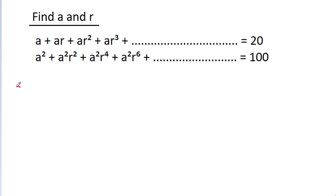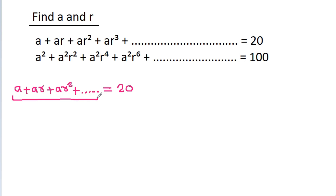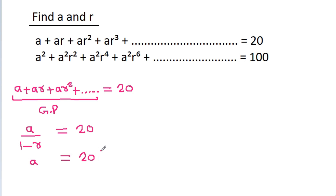We have a plus ar plus ar squared and so on is equal to 20, and it is in GP. The sum of an infinite GP is a divided by 1 minus r, which equals 20. So a will be equal to 20 times 1 minus r.